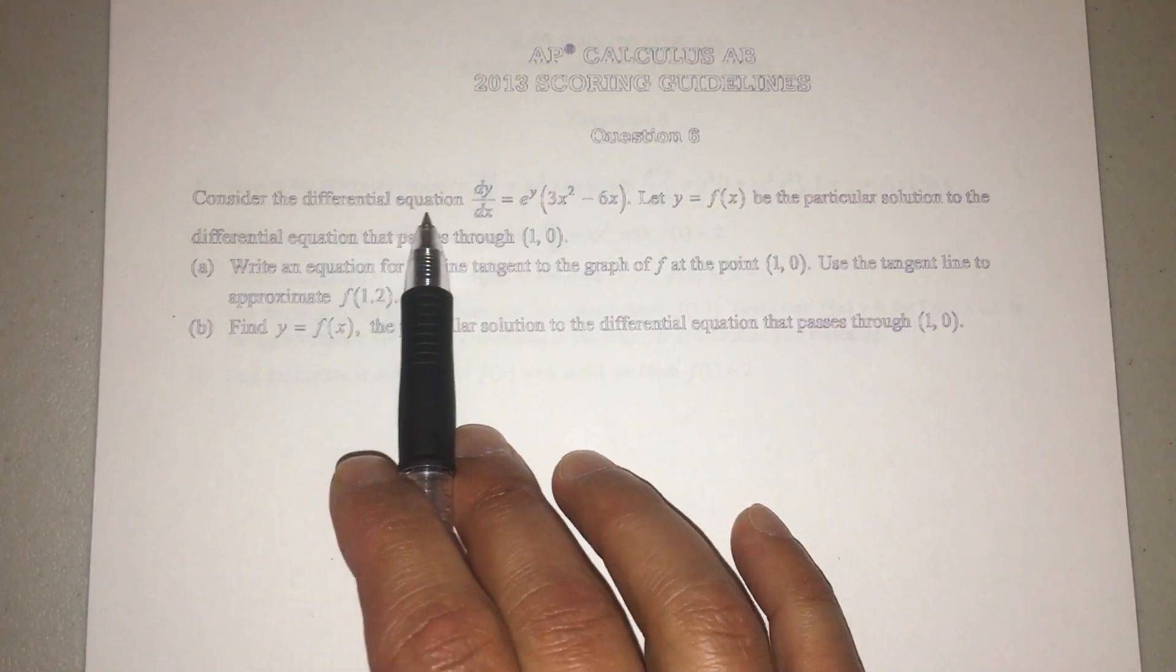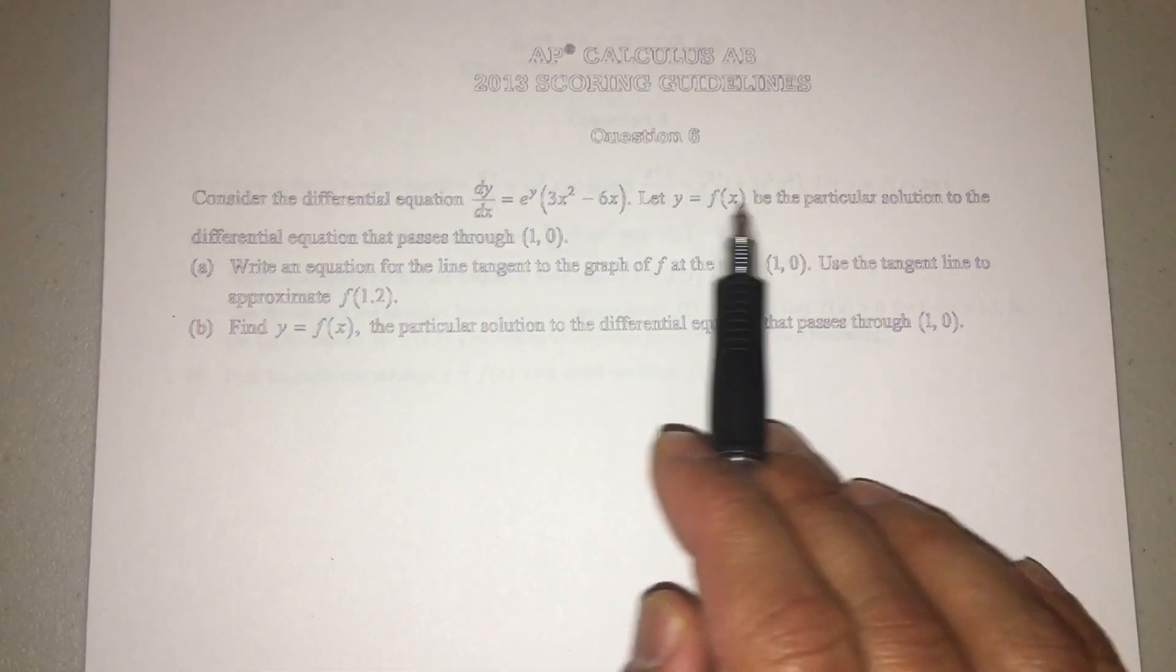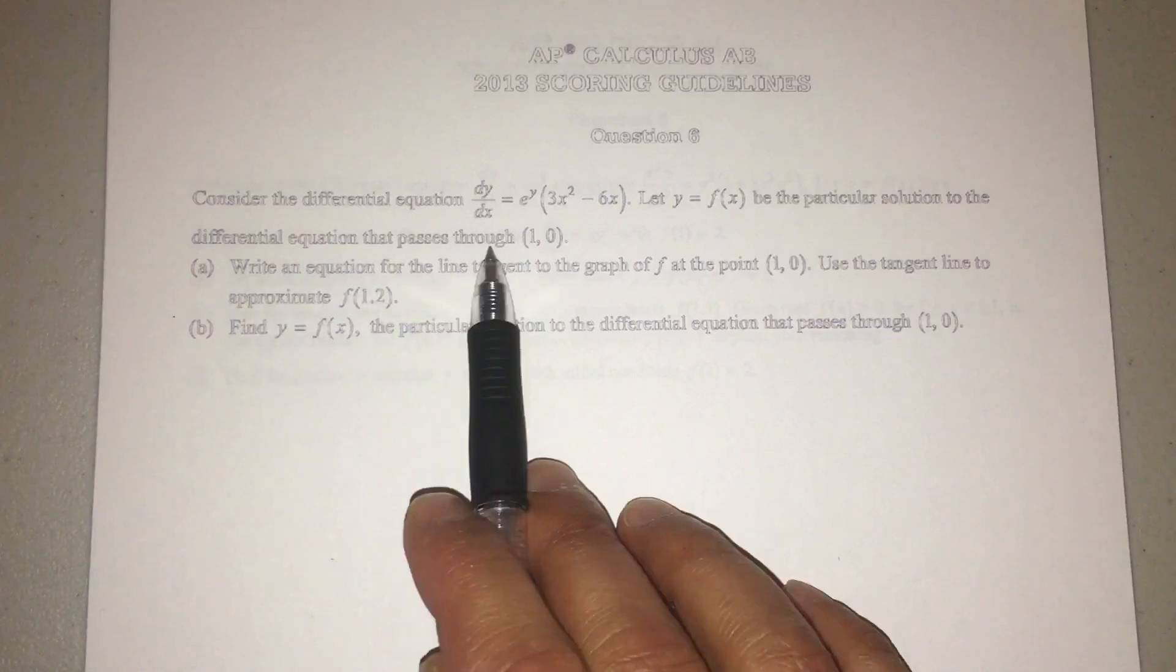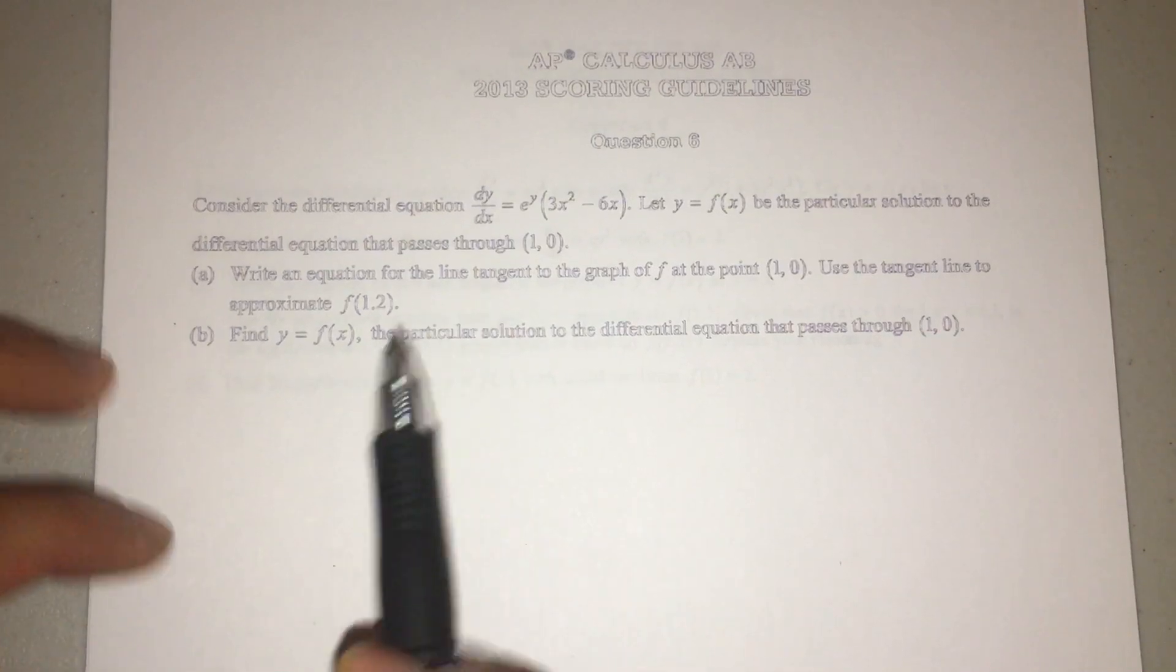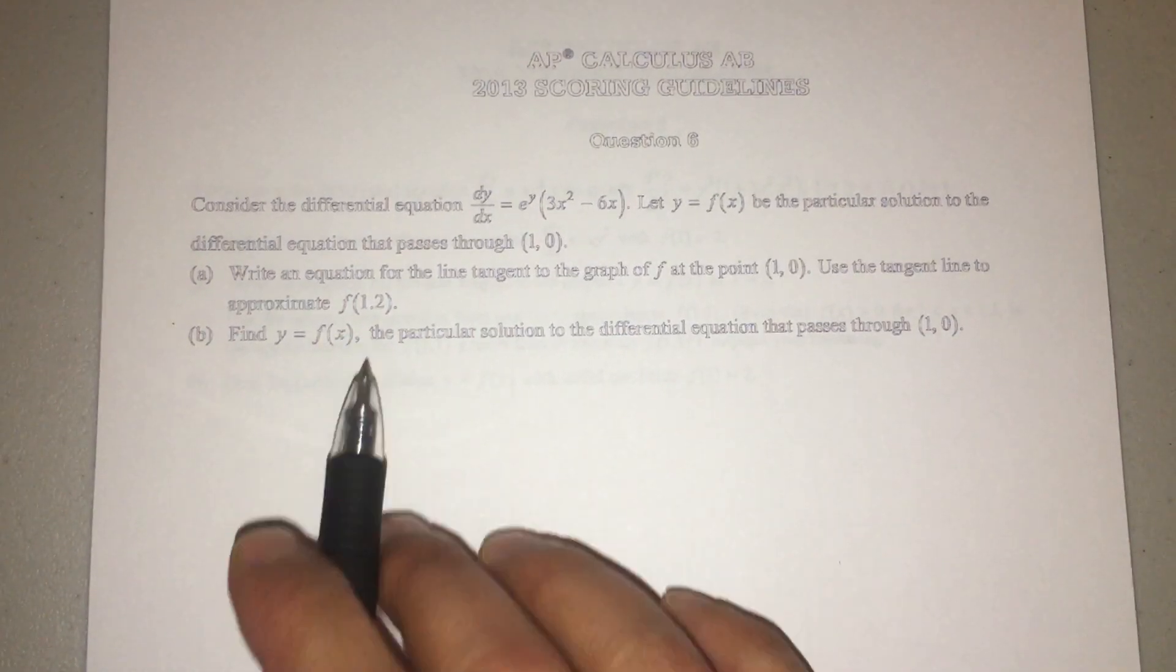This is an old one from 2013, but it's still good practice, and as long as you understand what they're asking you, you'll be able to do well or get as many points as possible. So consider the differential equation dy/dx = e^y(3x^2 - 6x), and f(x) is a particular solution to the differential equation that passes through (1,0), that's our initial condition. Write an equation for the line tangent to the graph at (1,0) and use the tangent line to approximate f(1.2).